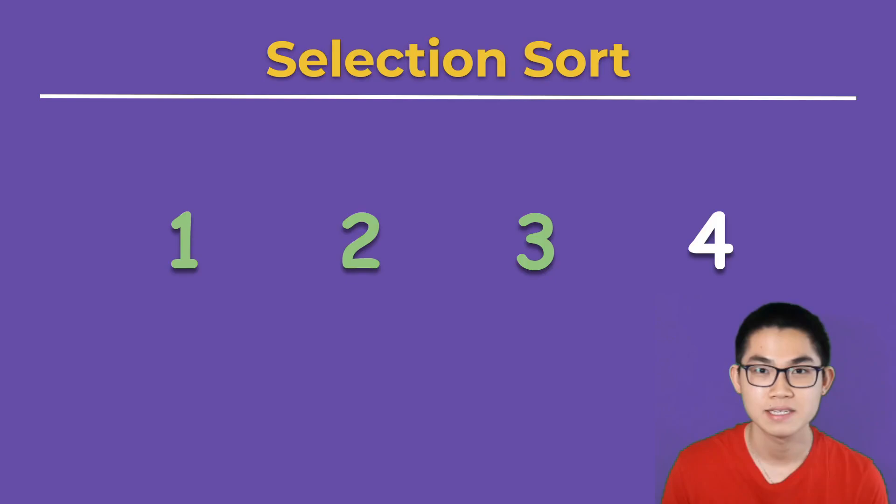3 is in its correct place. So, once we sort the first 3 numbers, the last number is automatically in its correct place as well.